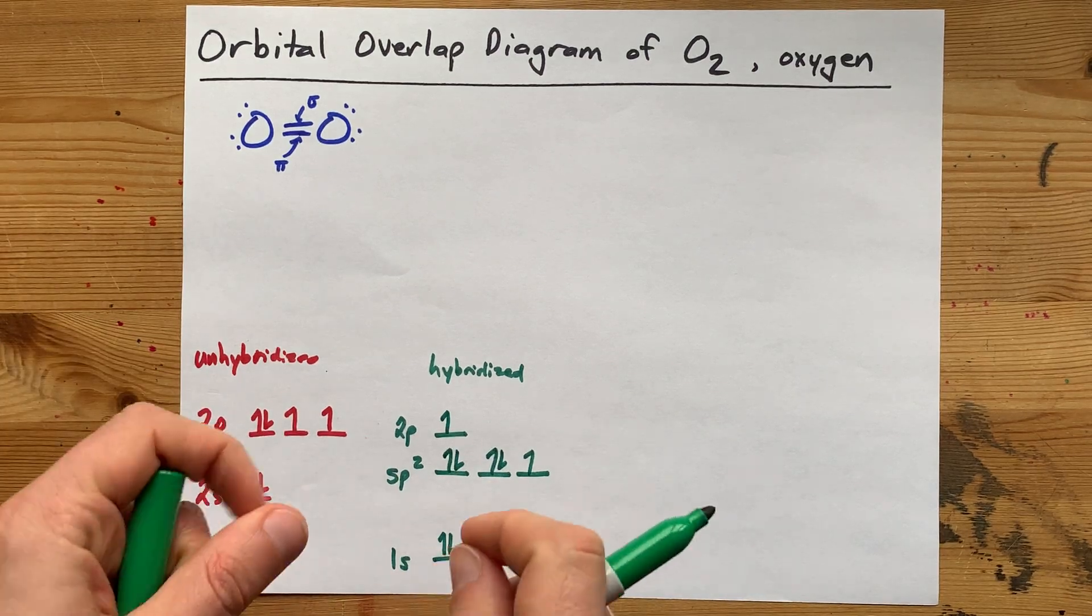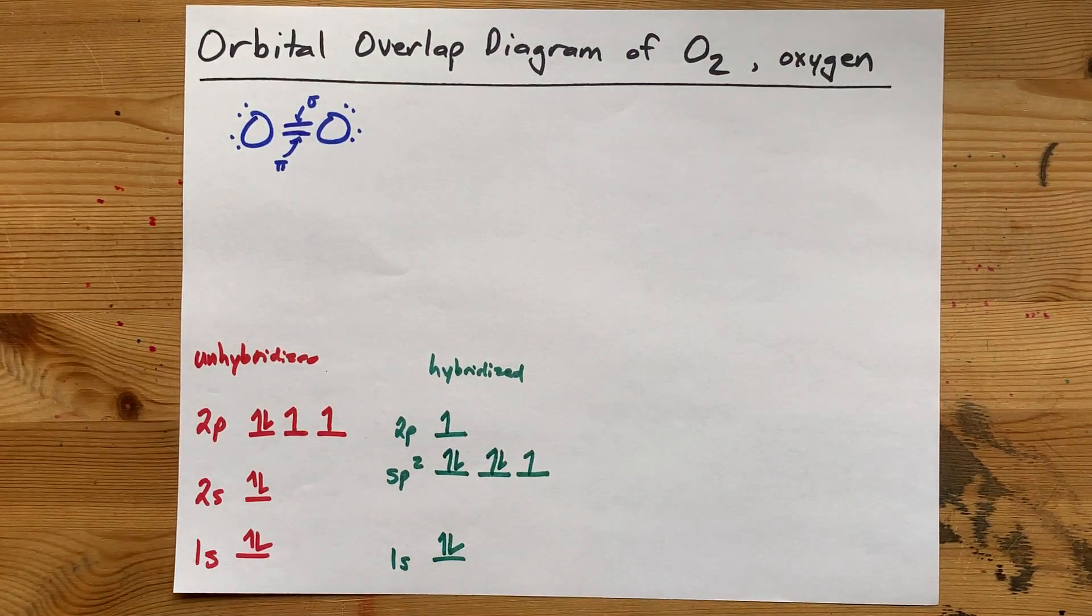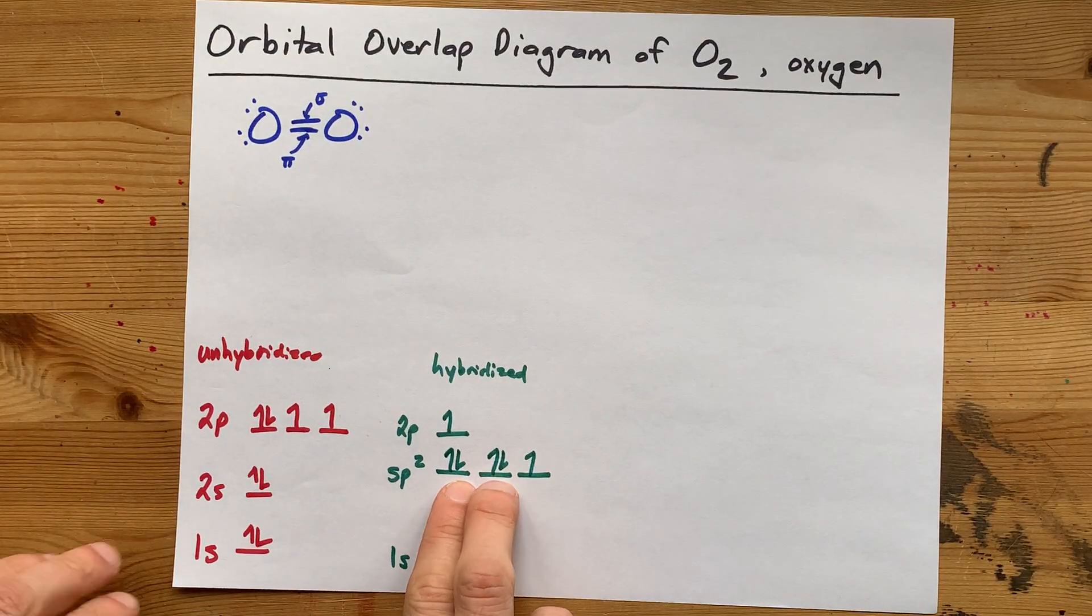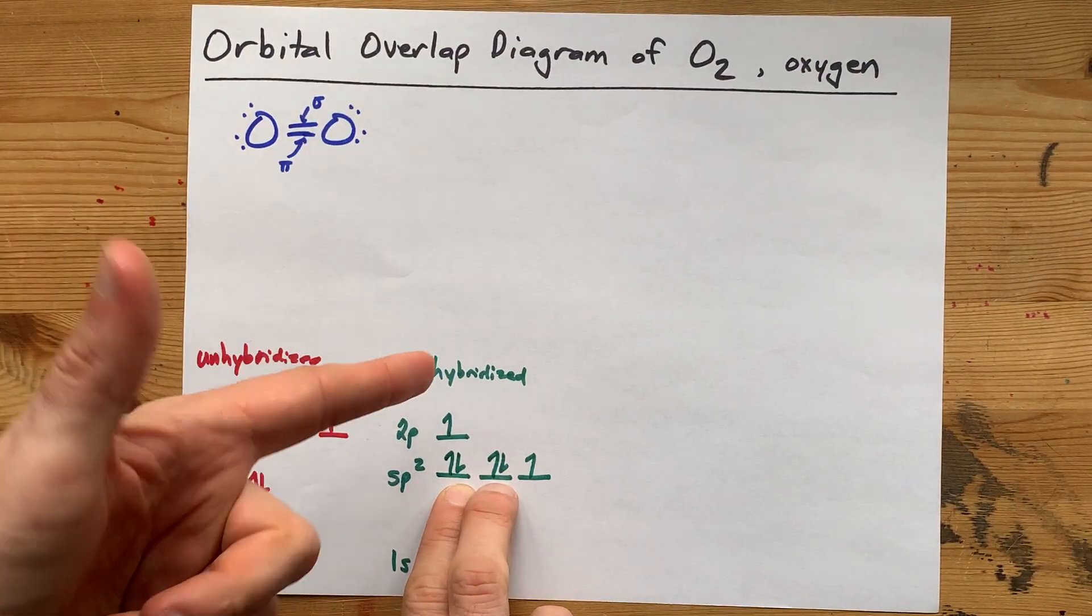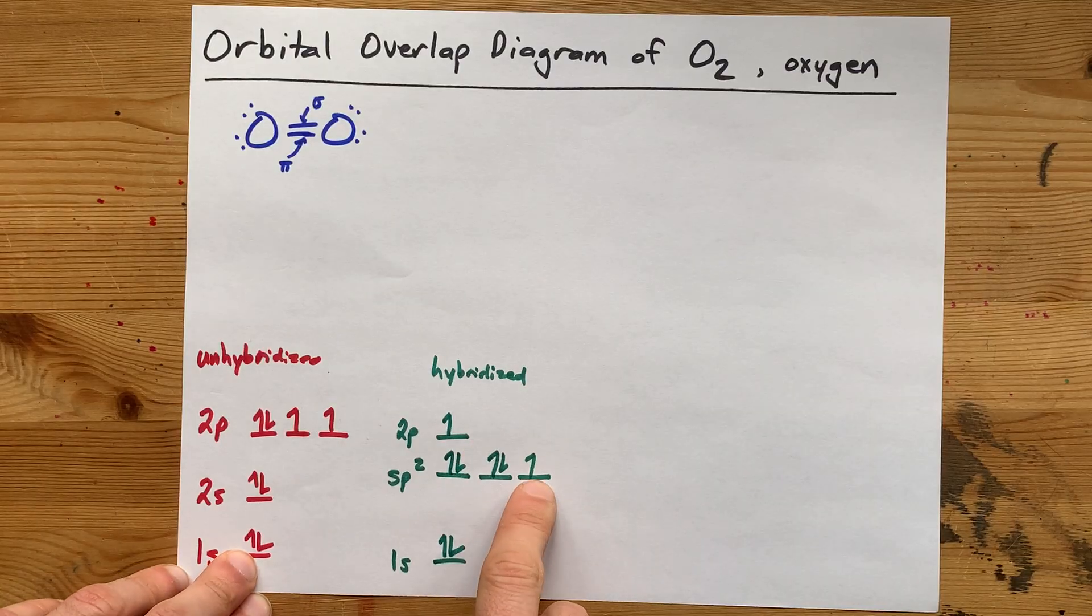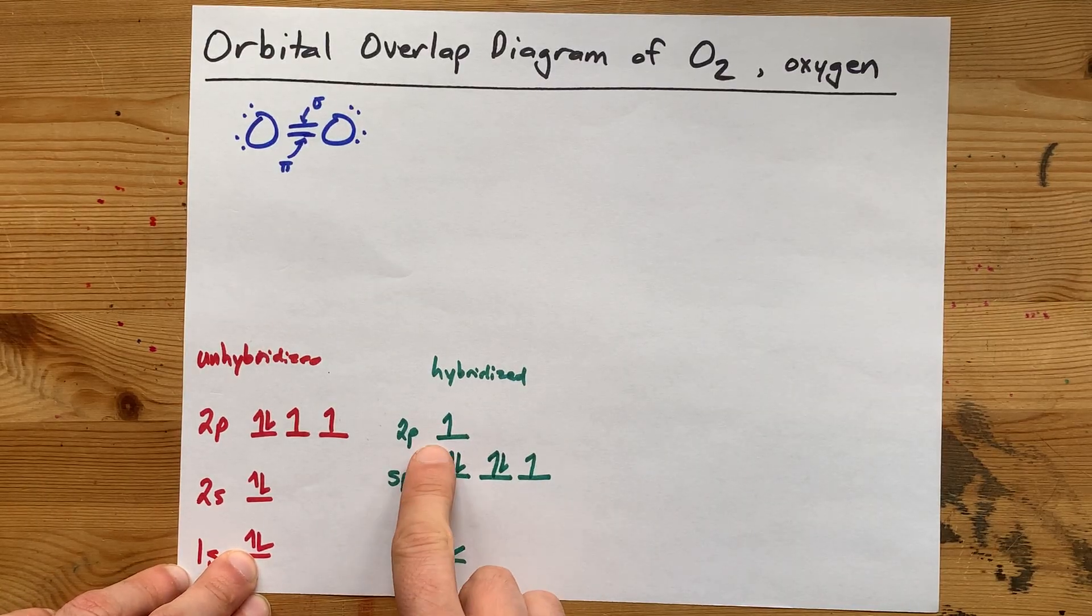I'm going to draw it this way, even though it violates the Aufbau principle, because I know that I have two lone pairs, 1, 2, get it? And I need a sigma bond and a pi bond.